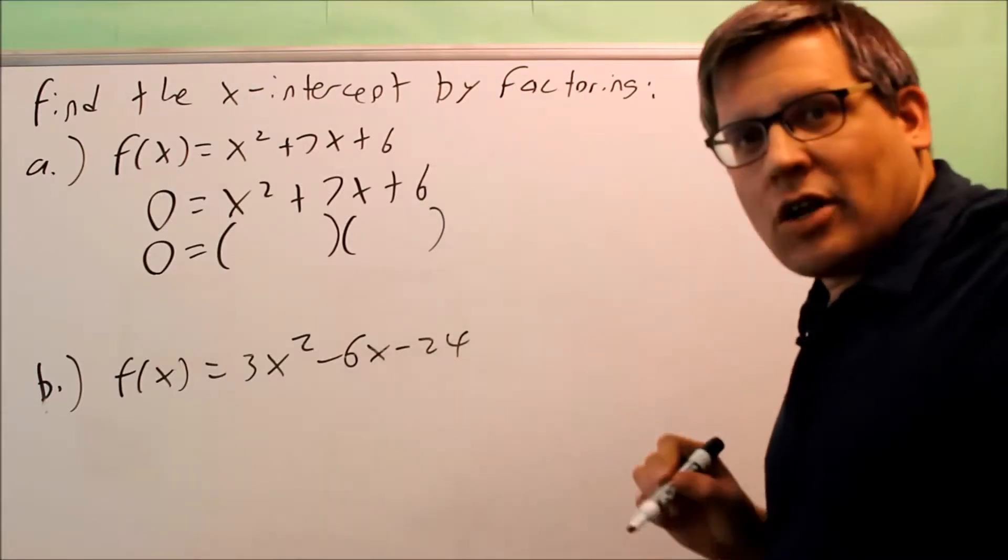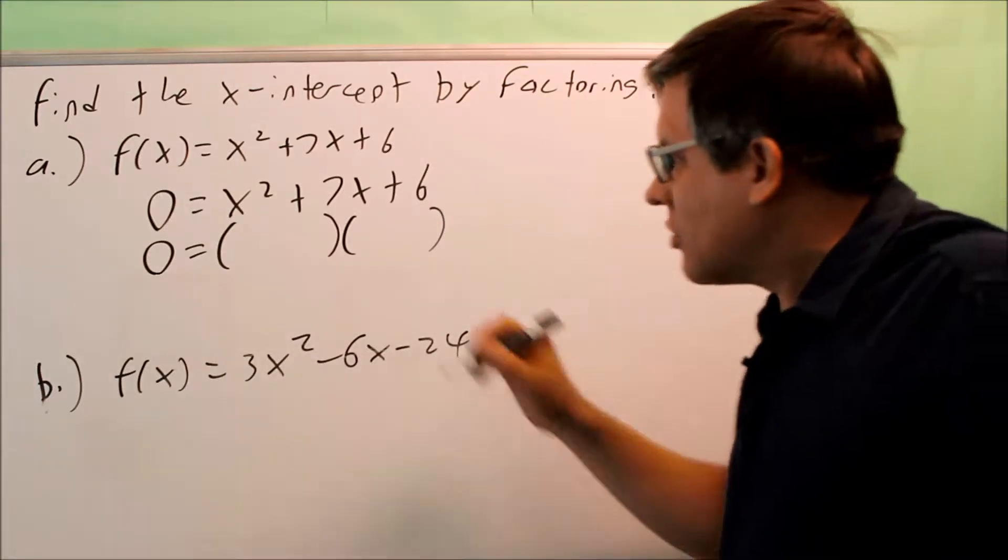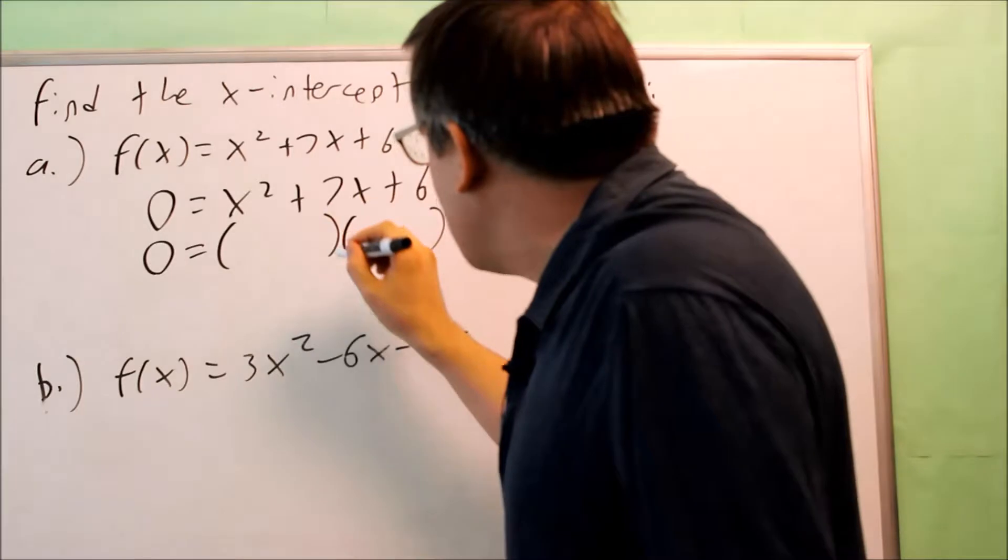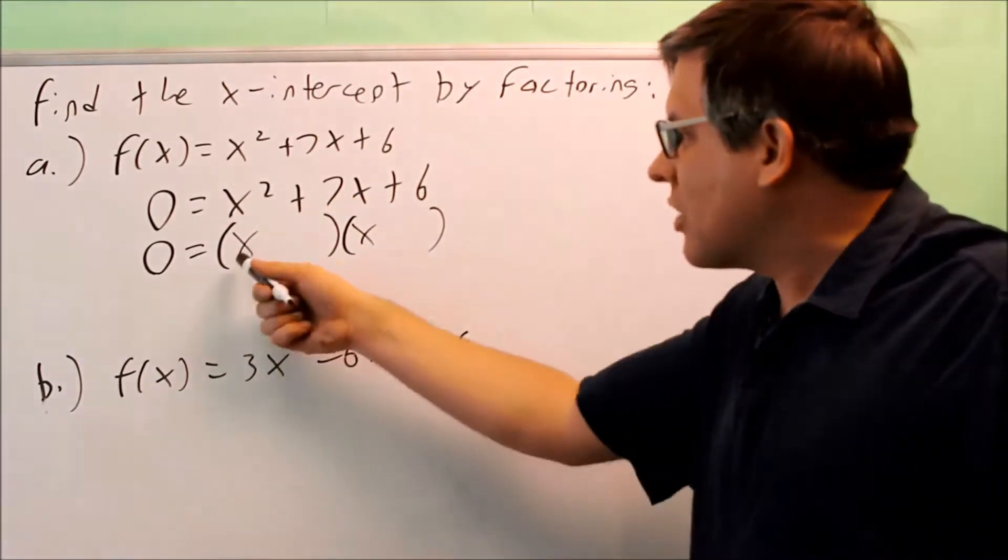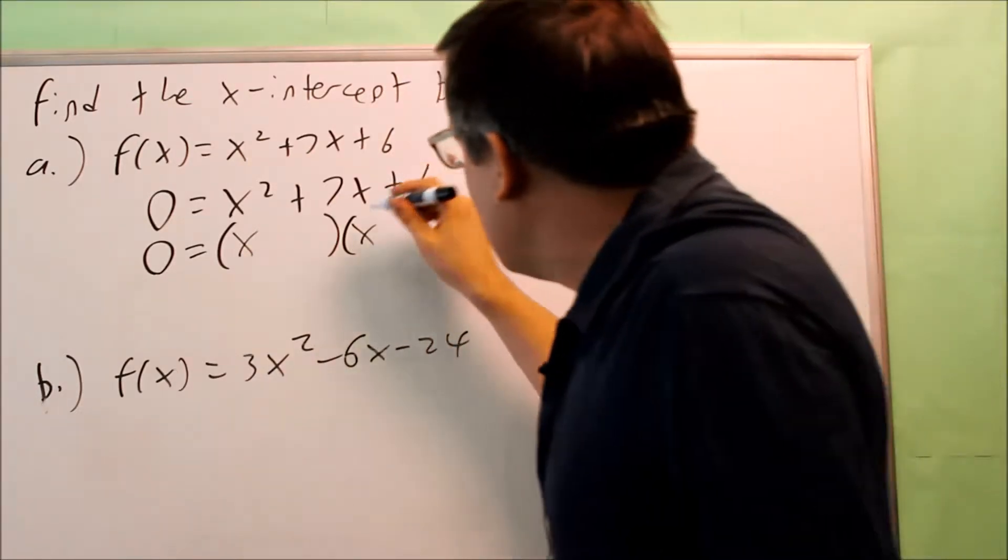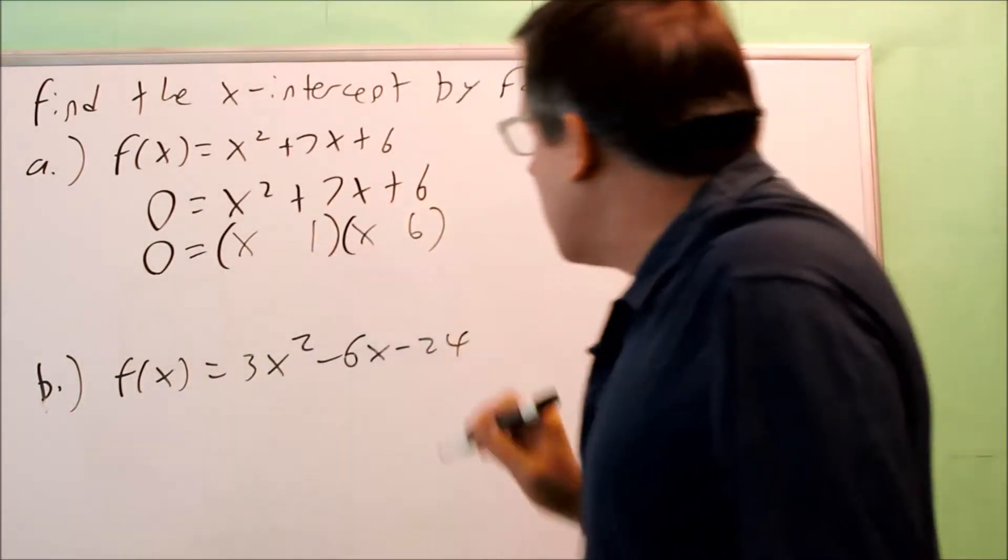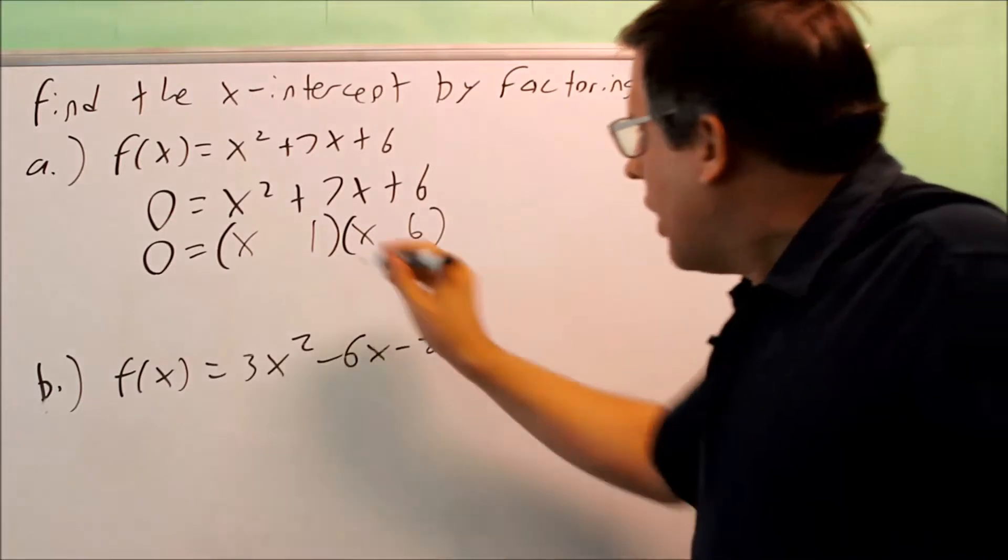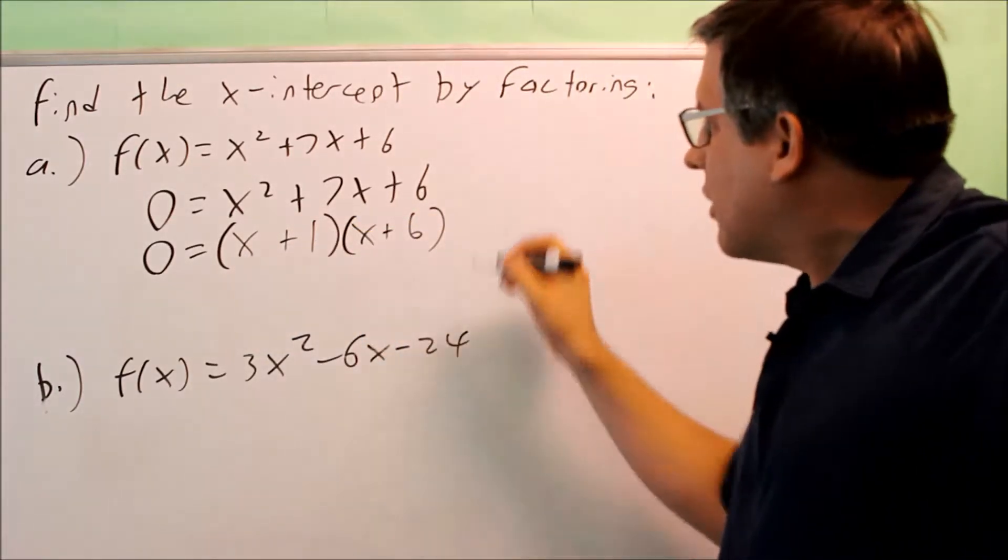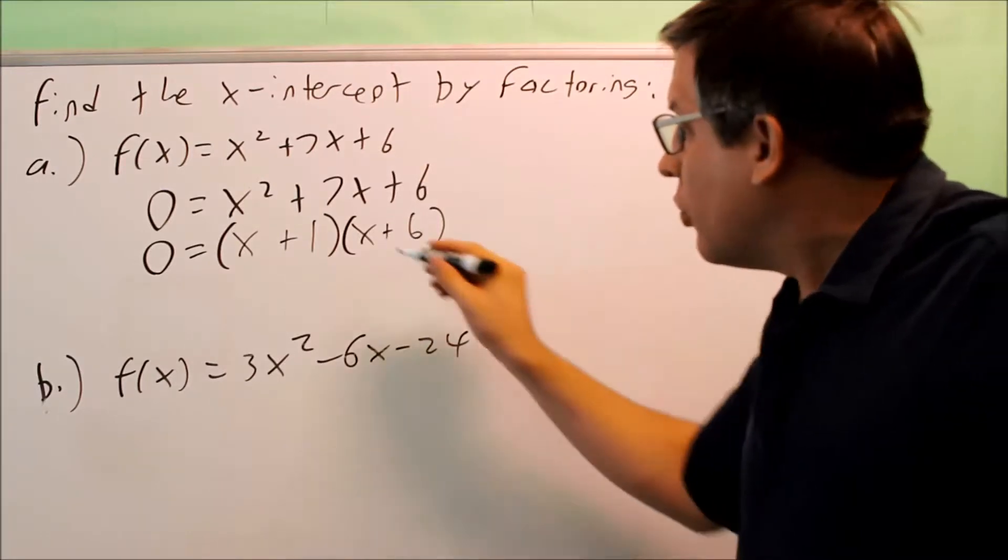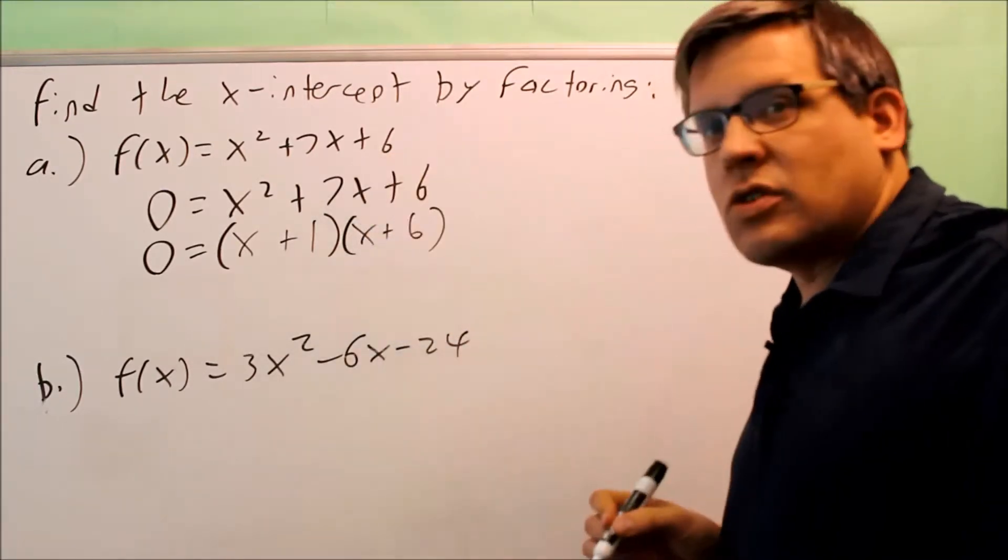So 6 either has 2 times 3 or 1 and 6. So the only way that that's going to work is if you use a 1 and 6. Now first, I have an x and an x here because x times x equals x squared. But then, you want to put a 1 and a 6 down for this one and you're going to do plus because positive 1 and positive 6 added together give you a positive 6. When you add 1 and 6 together, it equals 7.